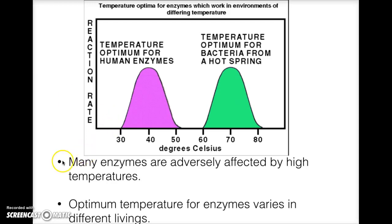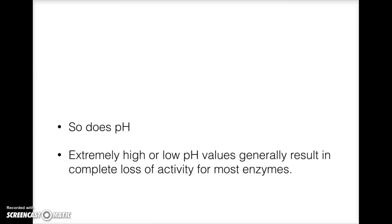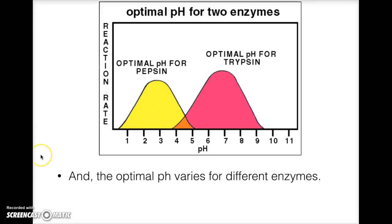And so does pH. Extremely high or low pH values generally result in complete loss of activity for most enzymes, and the optimal pH varies for different enzymes, like temperature.